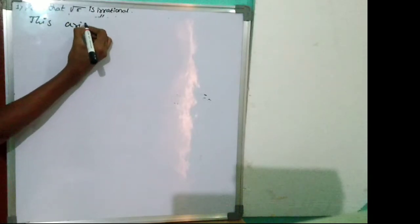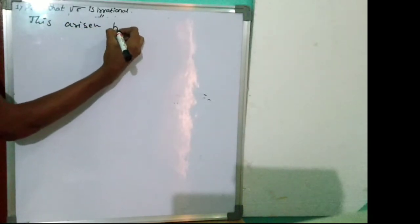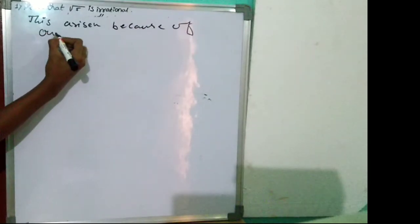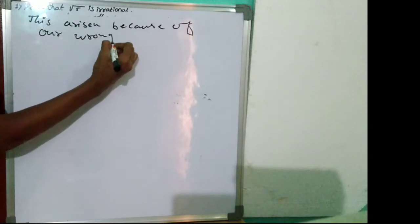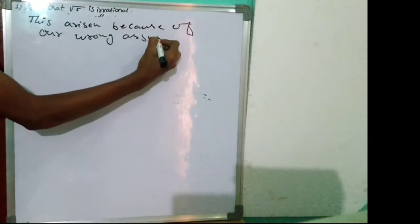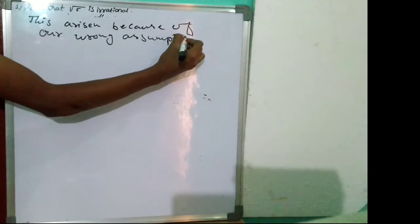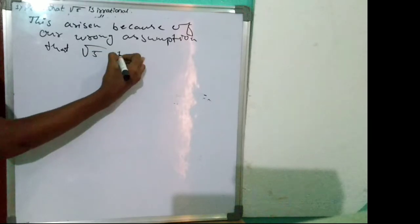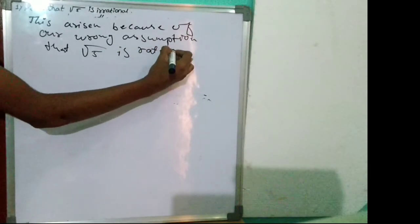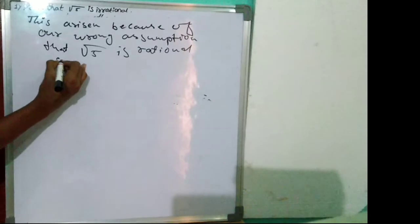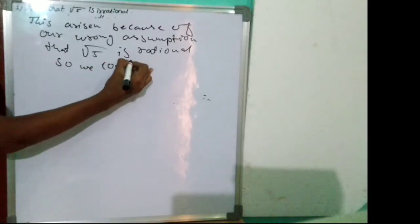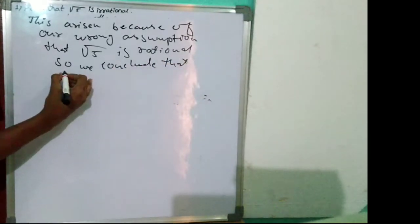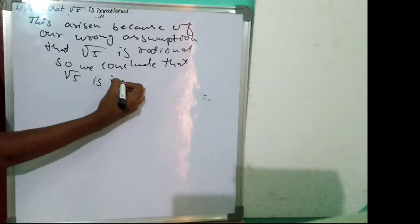This is a contradiction to our assumption that root 5 is rational. So we conclude that root 5 is irrational.